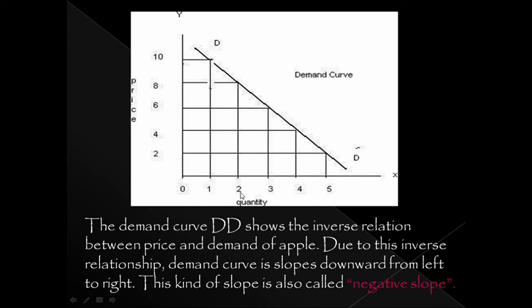Quantity values are 1, 2, 3, 4, which we plot. So at price 10, quantity is 1; at price 8, quantity is 2; at price 6, quantity is 3 — and so on. We plot these points and draw the demand curve. The demand curve is negatively sloped — it has a negative slope because price and quantity demanded move in opposite directions.